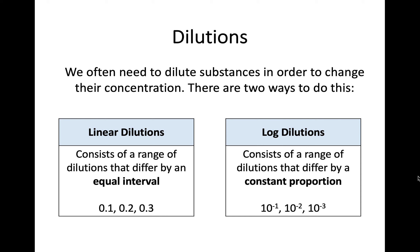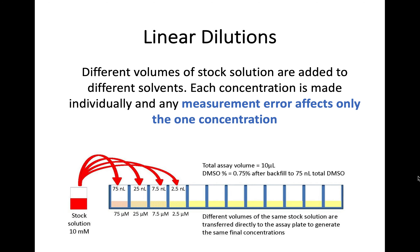The other type is a log dilution. You still have a range that gets more diluted, but this time it's by a constant proportion — for example 10 to the minus 1, minus 2, minus 3. This has a slightly different issue which we'll look at shortly. Hopefully you get some hands-on experience working with these dilutions and how to set them up. When working with a linear dilution you have a stock solution that you then dilute further along your range, with equal intervals each time.